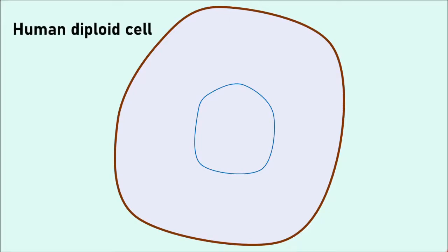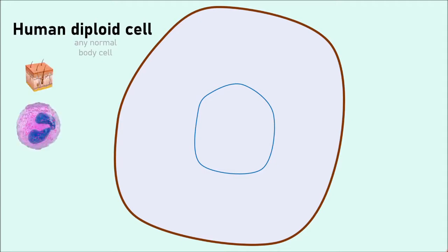Shown here is a human diploid cell, with all the organelles apart from the nucleus omitted. The term diploid just means a normal body cell, i.e. not a gamete. This could be a skin cell, a blood cell, a nerve cell, anything, as long as it is not a gamete — so not a sperm or egg cell.